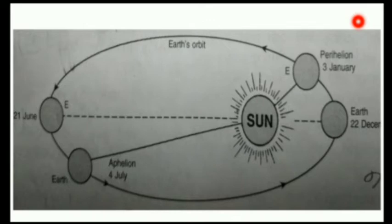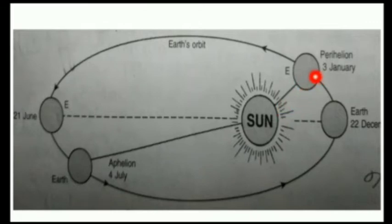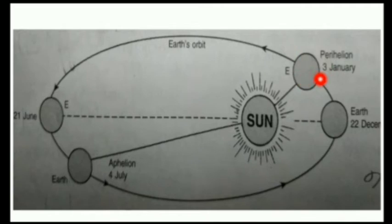A question can be asked: why does the Earth move more quickly in its orbit when it is at perihelion than at aphelion? When the Earth is at perihelion, the distance between the Sun and the Earth is very small, so the planet moves inward toward the Sun. Because of the gravitational pull of the Sun, there is a higher orbital speed, so the Earth moves more quickly at perihelion.